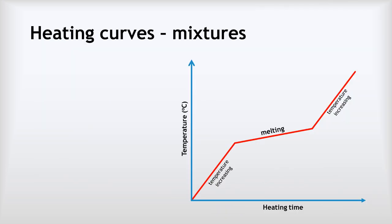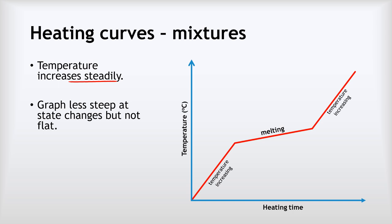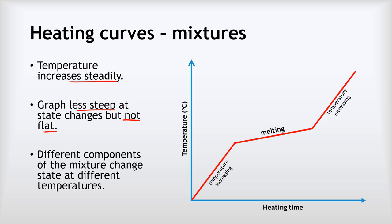For a mixture, the big difference is that although the temperature increases steadily, when it gets to the state changes the graph becomes less steep but does not flatten out. This is because the different components of a mixture change state at different temperatures — it melts over a range of temperatures rather than all at once. You've all experienced this with a bar of chocolate in a pocket: it goes through a gooey stage where it's half melted and half not.